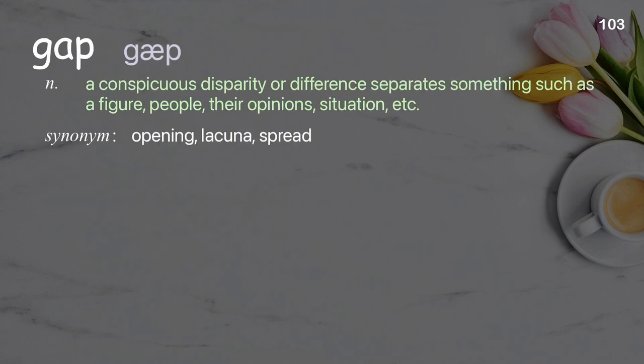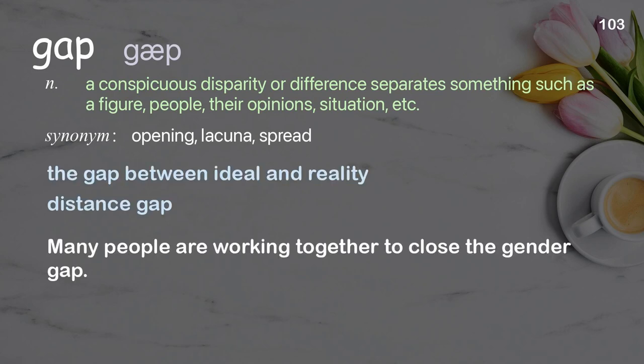Gap. A conspicuous disparity or difference that separates something such as figures, people, their opinions, or situations. Examples: the gap between ideal and reality; distance gap. Many people are working together to close the gender gap.